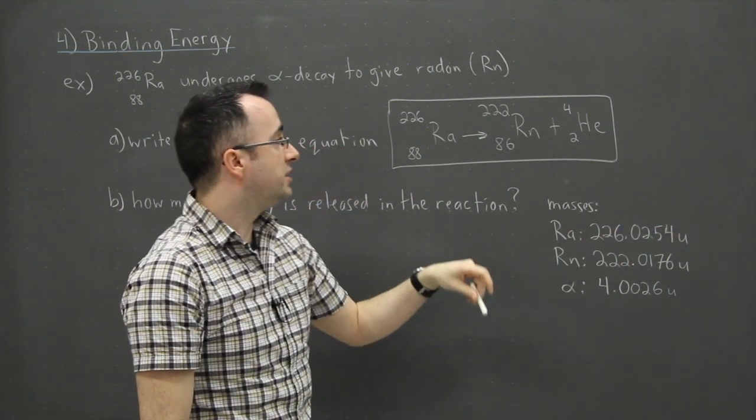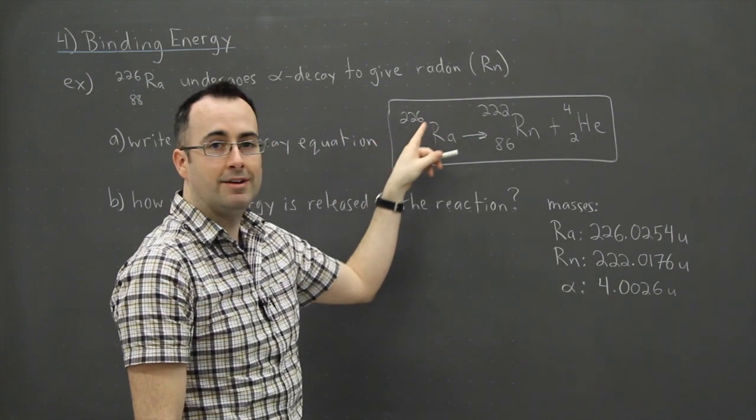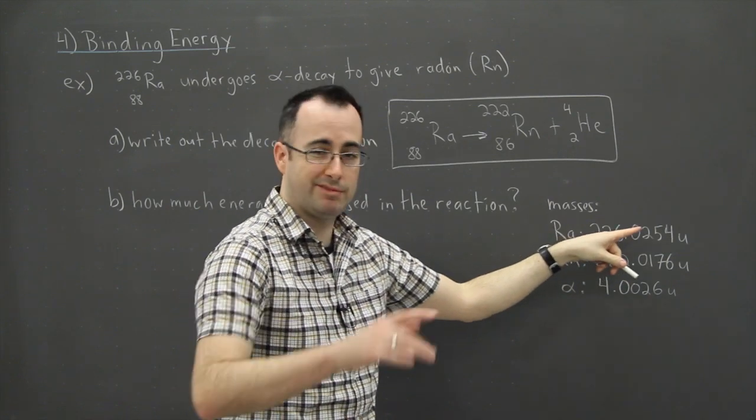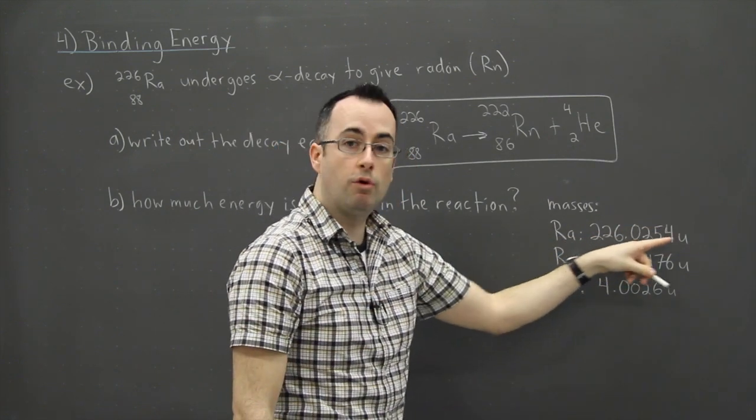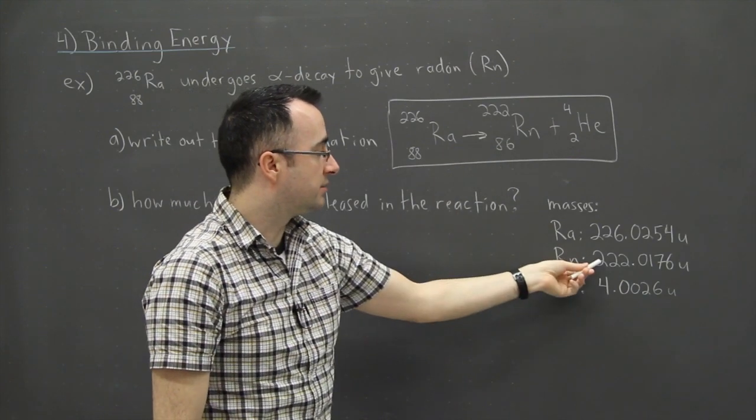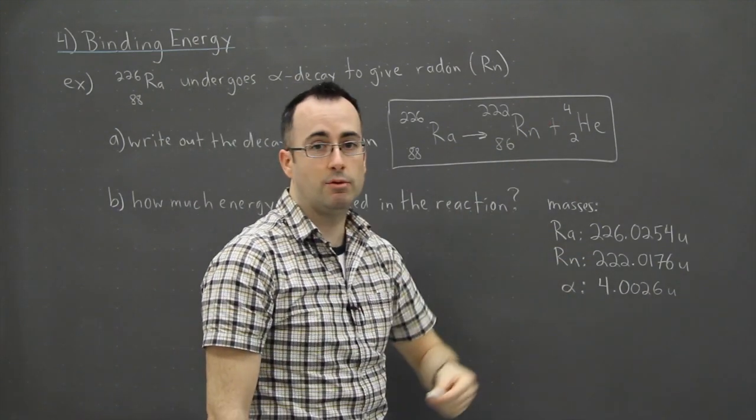Notice something, the mass in U's is pretty much equal to this nucleon number, isn't it? Look, radium is 226, it's pretty much 226, it's point stuff, and we normally go to four decimal points here. And then radon is 222, hey look, it's 222. And alpha is supposed to be four, it's supposed to be four.